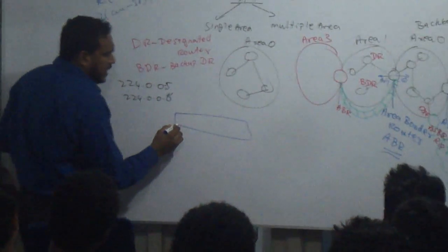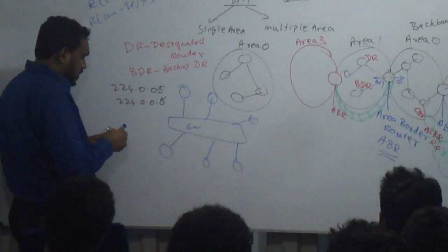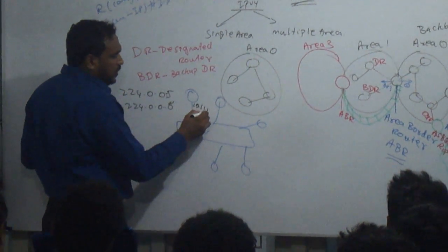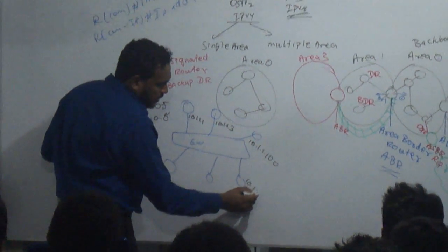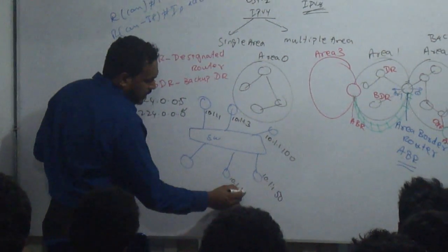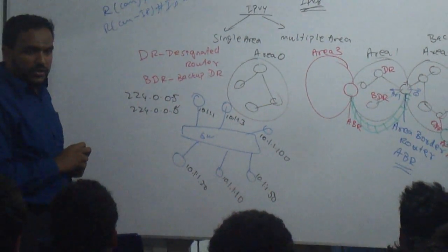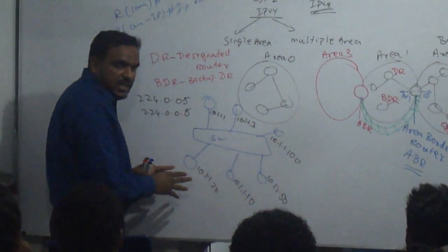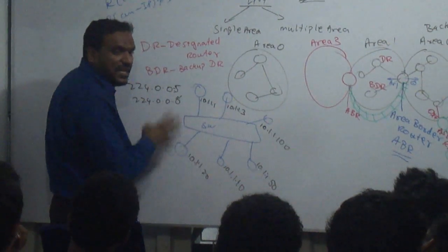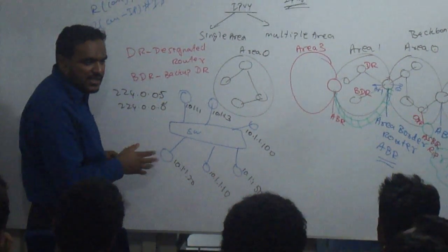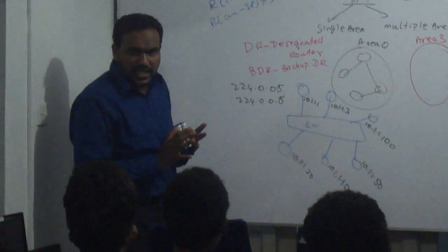Consider a scenario where a switch has multiple routers connected with addresses like 10.4.4.1, 10.4.4.3, 10.4.1.50, 10.4.1.10, and 10.4.1.20. Each router will send updates to the DR. There will be an election for the DR — the router with the highest router ID will be elected as the DR.